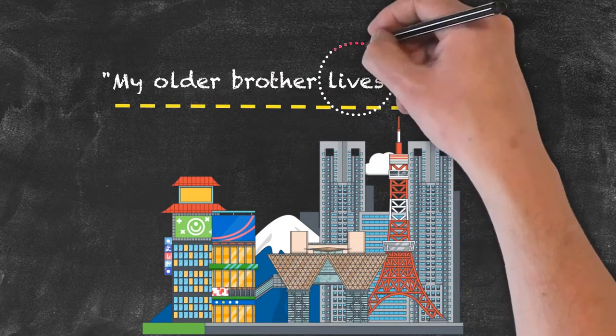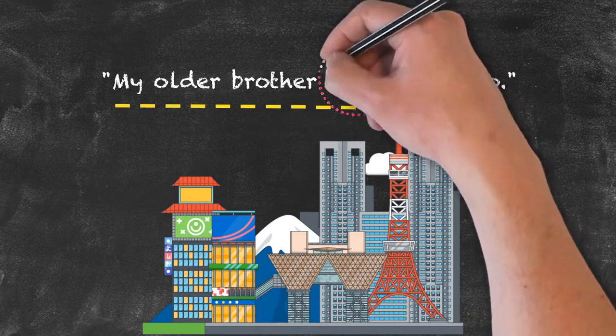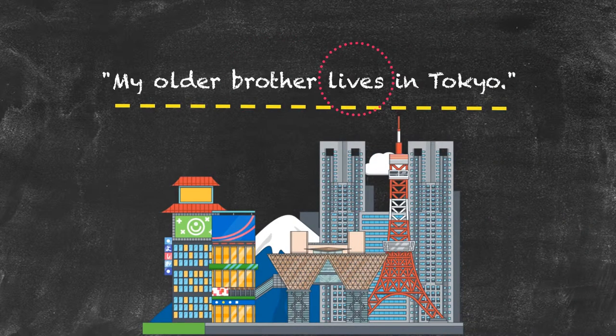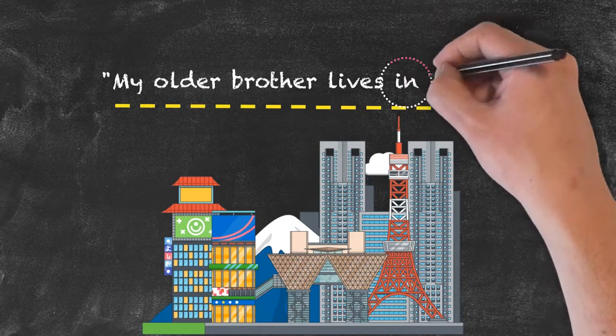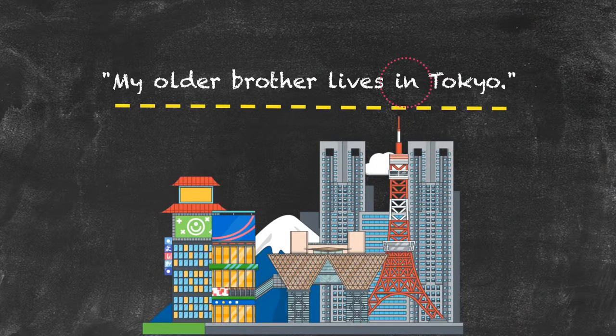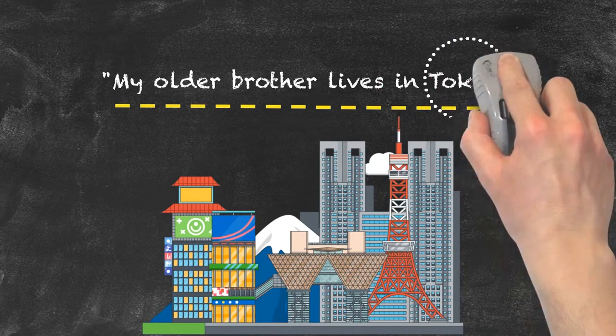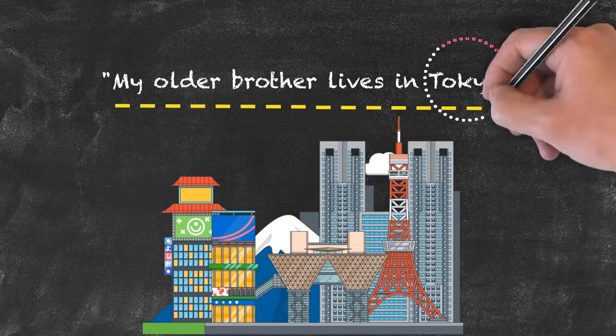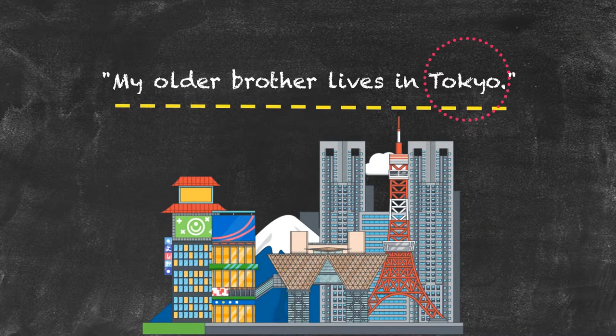'Lives' is the action within the sentence. 'In' introduces the place of the action, and 'Tokyo' indicates the actual place of the action.